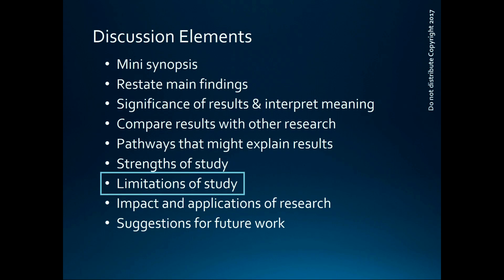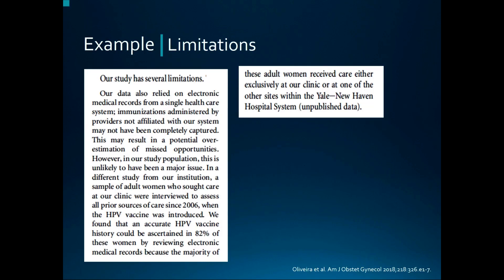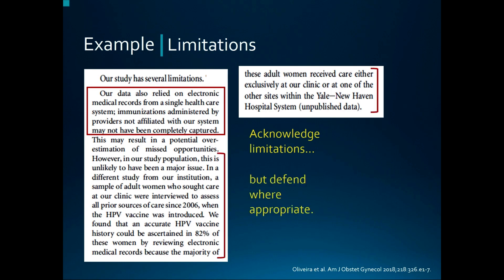Every study has limitations, and it's important that you acknowledge them. Being transparent about your limitations helps readers better understand how to interpret your research findings. It also indirectly makes the argument that you're a credible author because you're showing that you understand what your limitations are. A helpful strategy: state the limitation, and then defend that aspect of your study by explaining why it is not likely to have impacted your results much. This strategy helps build your credibility as researchers who know what factors may have impacted your findings.